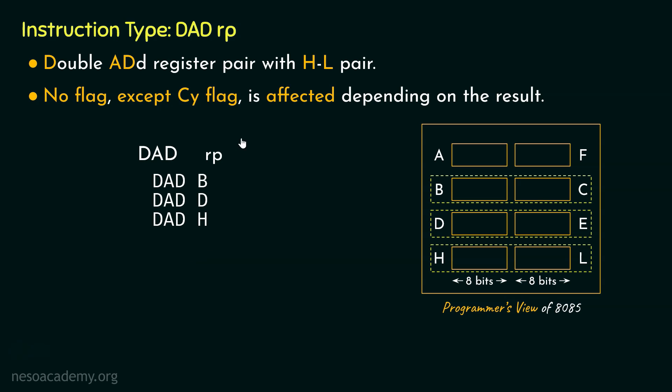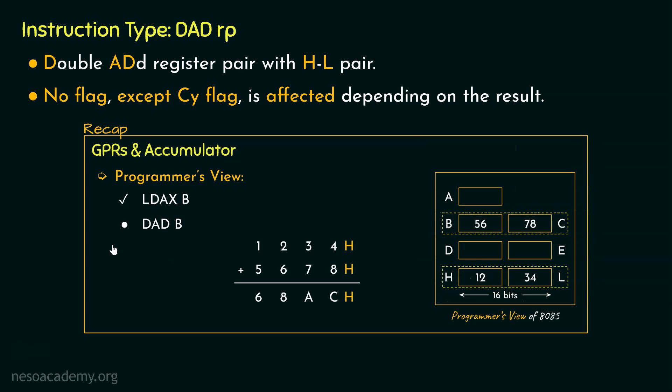So that's why the name double add. Now let me remind you, we already have seen how these instructions perform in the previous chapter when we were learning about the GPRs and the accumulator. We performed the addition of these two hexadecimal numbers of four digits. Now four-digit hexadecimal numbers are also 16-bit numbers in binary. If you notice carefully, in order to perform this addition, we loaded the value 1234 within the HL register pair. That's our first operand. Coming to the next operand, that is 5678, this 16-bit data was loaded within the BC register pair.